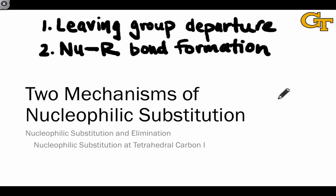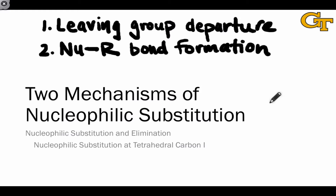These two events may occur simultaneously, with the leaving group departing at the same time the nucleophile is forming a bond to the electrophilic atom, or they may occur in a stepwise fashion, with the leaving group departing with a pair of electrons first, generating a cationic intermediate that then undergoes formation of a bond with the nucleophile. These concerted and stepwise pathways are the two key mechanisms of nucleophilic substitution that we're going to discuss in this video.